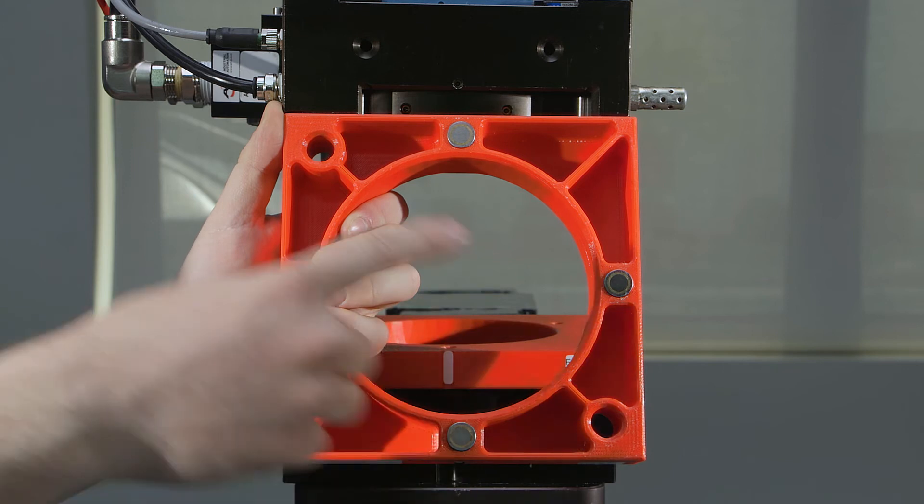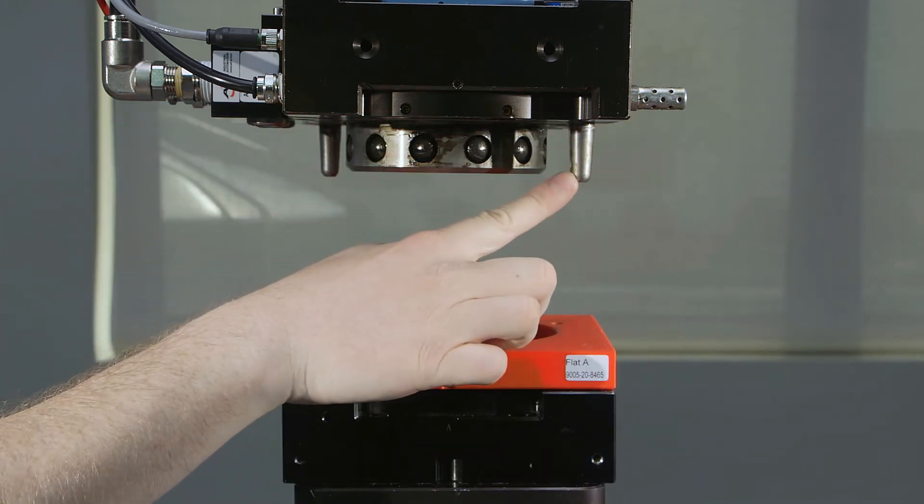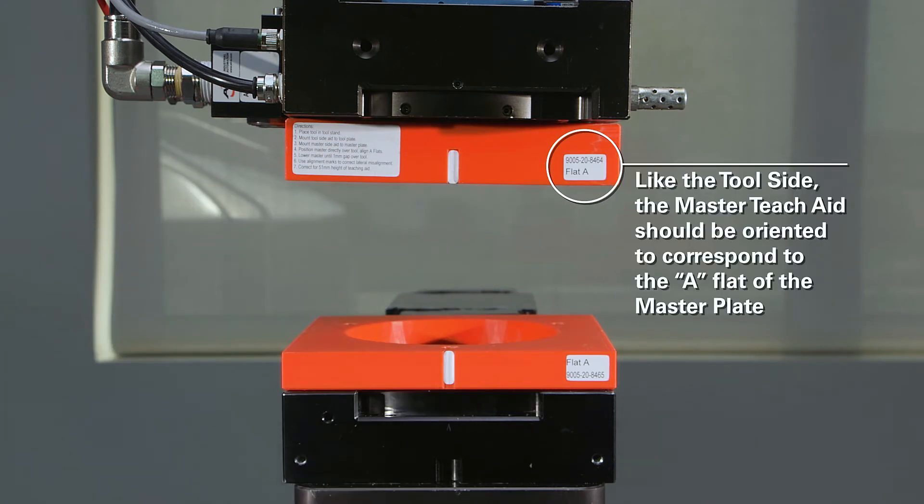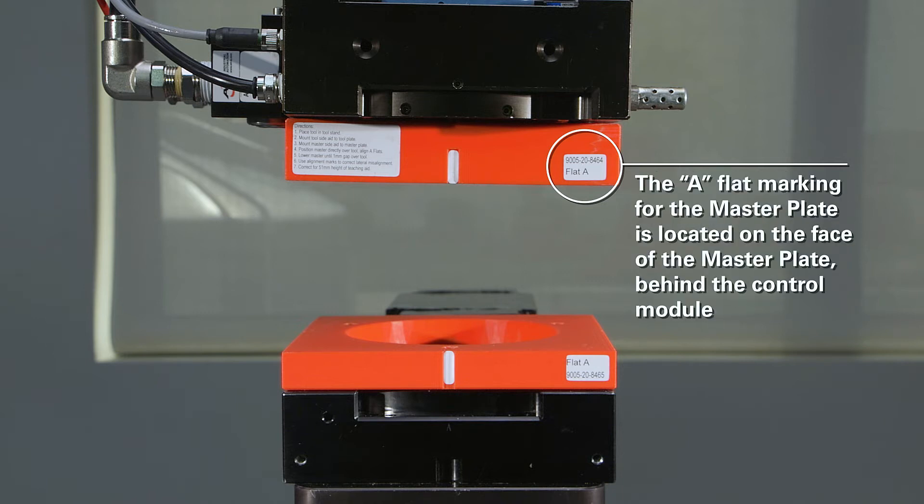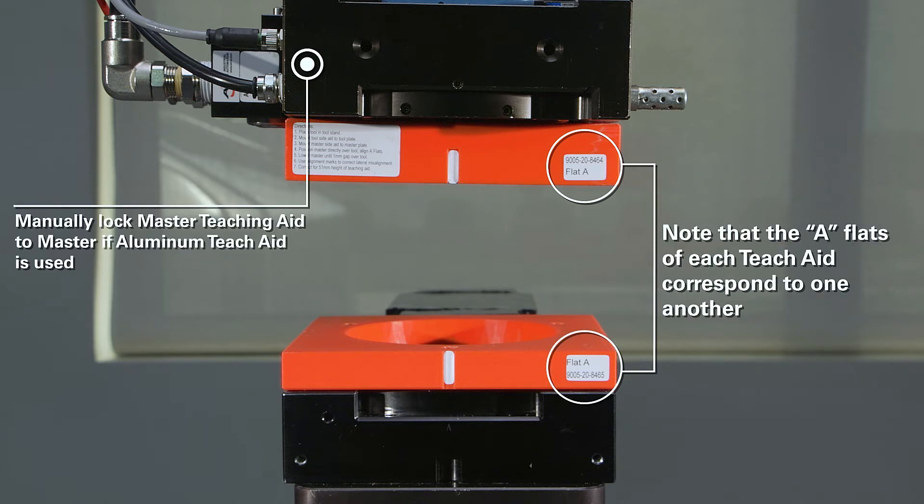The master side T-Jade contains two holes for the two alignment pins on the tool changer master plate. Mount the master side T-Jade to the tool changer master plate by inserting the alignment pins of the master plate into the holes of the master side T-Jade. Magnets in the body of the master side T-Jade will secure it to the tool changer master plate.